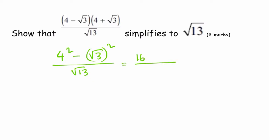4 squared is 16 minus root 3 squared, which is root 9, and that simplifies to just 3. In other words, we can cancel the square root out. That leaves us with 3 over root 13. 16 take away 3 is 13 over root 13.